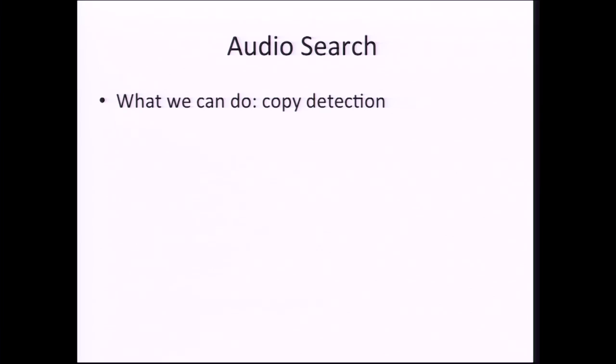What we can already do is copy detection. Many of you are familiar with the applications Shazam and Soundhound. If you hear a piece of music in the car or in a restaurant and you really like the song but don't know its name, you can record a short five to ten second sample on your cell phone and within seconds it will identify the song. This can already be done. The question we wanted to ask was: can we do this more efficiently? Rather than jumping into the technical details, I'd like to give you an analogy that communicates the idea we wanted to explore.